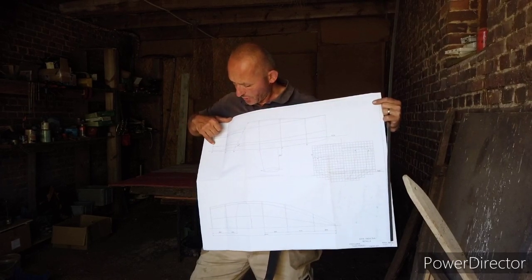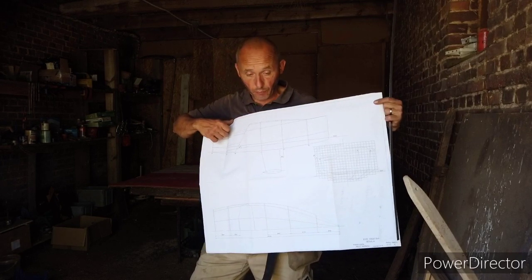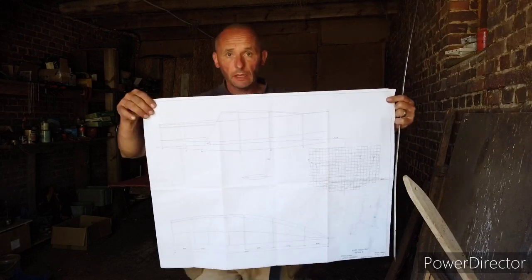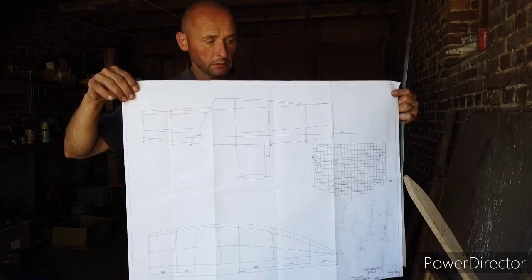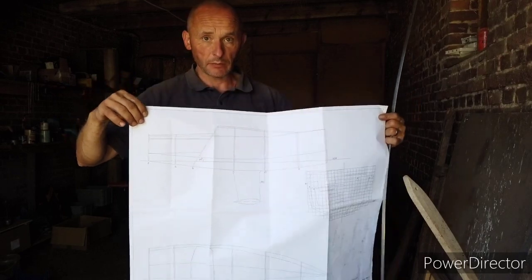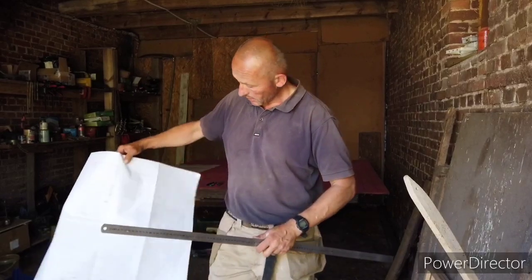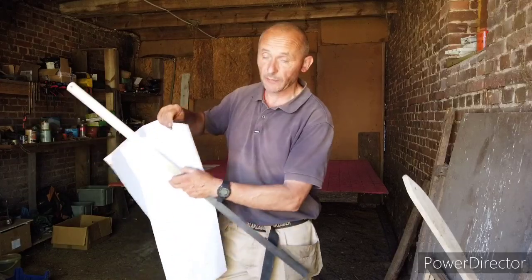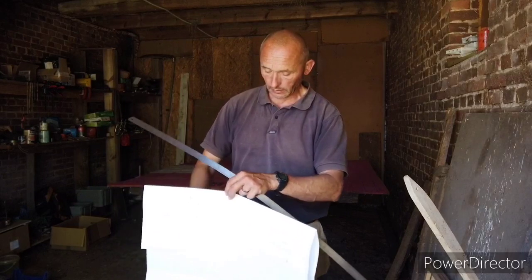Potem wręgi A i B będą trasowane później, gdyż nie są to standardowe wręgi takie jak są w projekcie setki. Tylko będą one robione specjalnie, rysowane specjalnie dla mnie. Cały projekt setki na rejs dookoła świata.